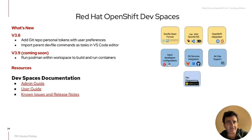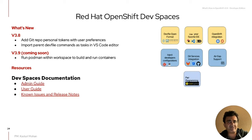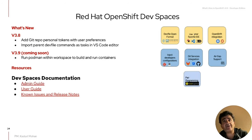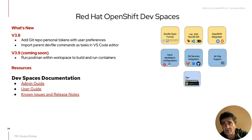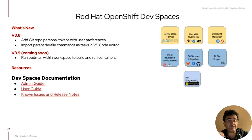In version 3.9, coming out soon, the key feature is the ability to run Podman using kubedoc within the workspaces of Dev Spaces. This allows you as a developer to build a container from the code you're editing in Dev Spaces, and then actually run the container there as well. You can do complete end-to-end development within Dev Spaces without having to go back to your local desktop and run Docker Desktop — a key feature that many customers are really excited about.